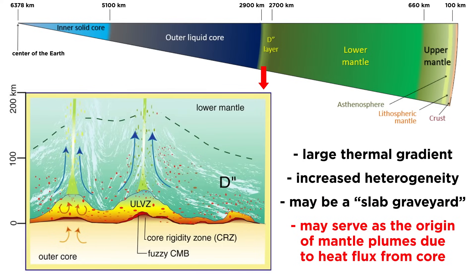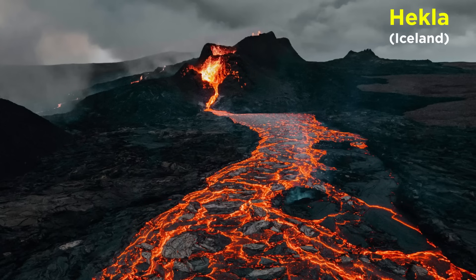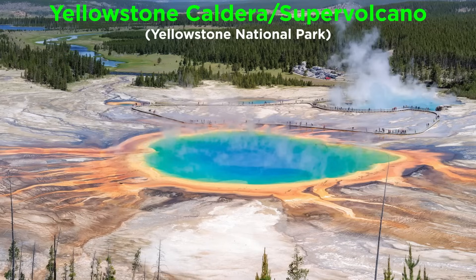Some believe that mantle plumes — cylindrical areas of hot, rising mantle — initiate from within D'', in areas where there is increased heat flux from the core. Mantle plumes have caused some of the largest volcanoes in Earth's history, with modern examples being located in Hawaii, Iceland, and Yellowstone.